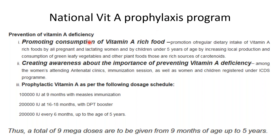The National Vitamin A Prophylaxis Program promotes consumption of vitamin A-rich foods. Prophylactic vitamin A is given at 9 months with measles immunization (1,00,000 IU), at 16–18 months with DPT booster (2,00,000 IU), and then 2,00,000 IU every six months up to age five. The Government of India recommends a total of nine megadoses of vitamin A from nine months up to five years.